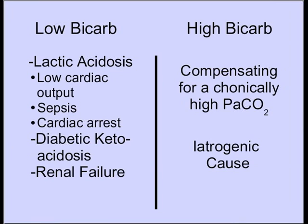As for elevated bicarb, bicarb will go up to compensate for a chronically high PCO2. This is a very slow process — the body shedding hydrogen ions and retaining bicarb — and can take a matter of weeks. In the case of a COPD patient who is chronically high, it probably happened over a matter of years. So compensation via bicarb for CO2 is a relatively slow process.